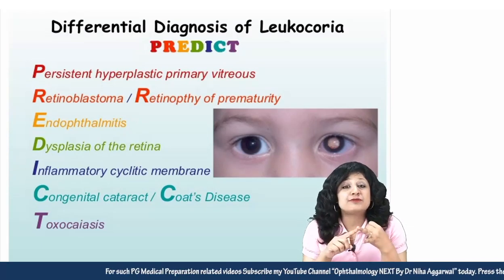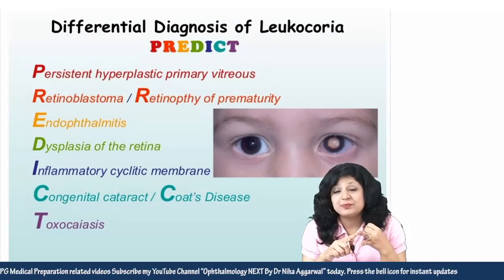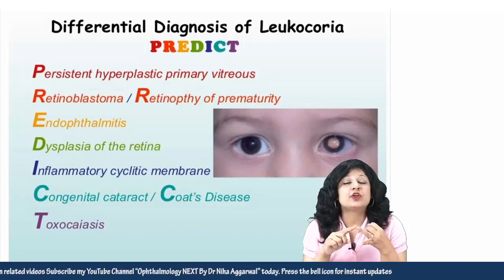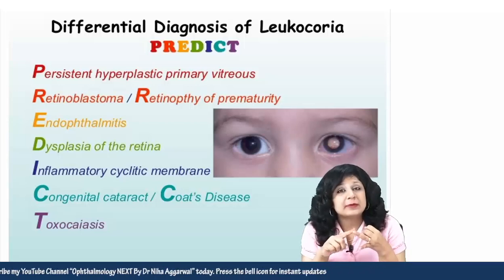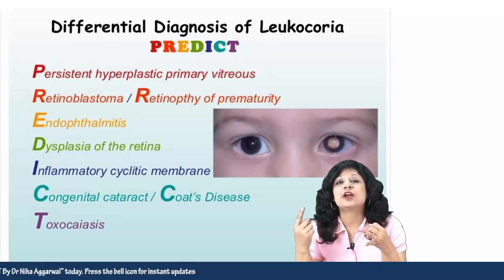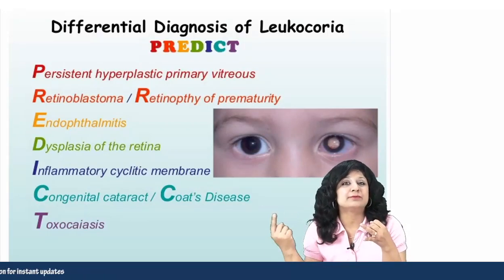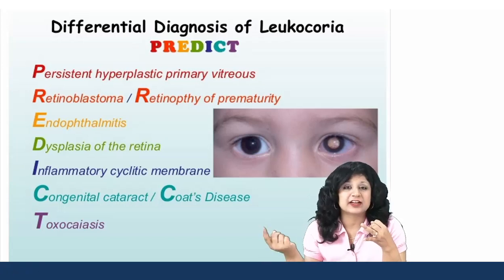R stands for retinoblastoma. The second R is for retinopathy of prematurity, which is also called retrolental fibroplasia.